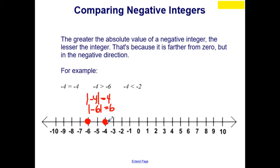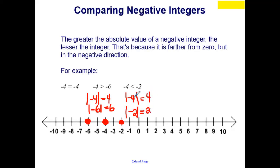Similarly, negative 4 is less than negative 2. Negative 4 is to the left on the number line, making it smaller. The absolute value of negative 4 is 4, and the absolute value of negative 2 is 2. So negative 4 has the greater absolute value, making it the smaller integer.